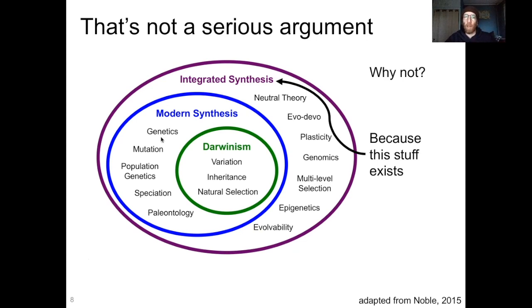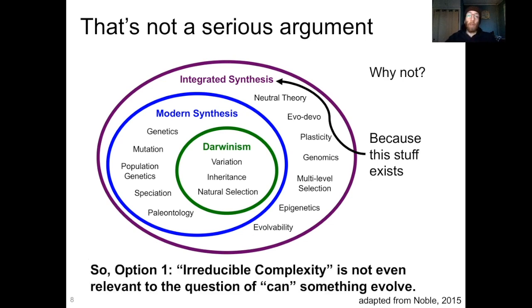So I'm left to wonder if Michael Behe is deliberately misrepresenting what evolutionary theory is, or if he simply does not know what evolutionary theory is. Option one: irreducible complexity is not even relevant to the question of whether something can evolve. To be clear, this is the best interpretation of Michael Behe's argument if you just read plainly what he says.